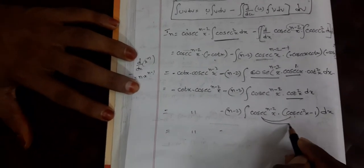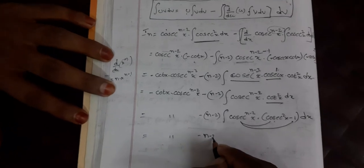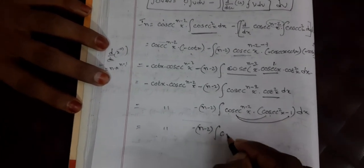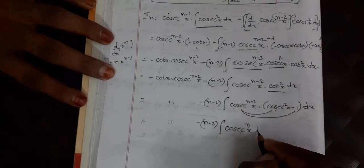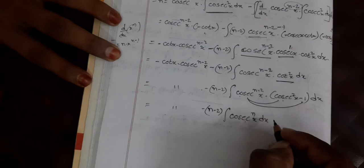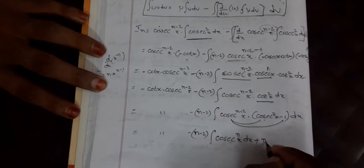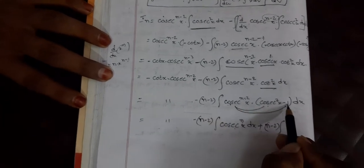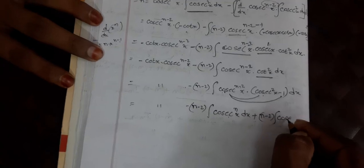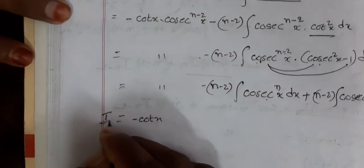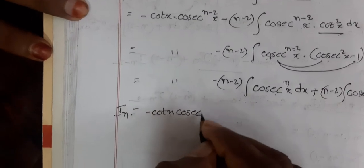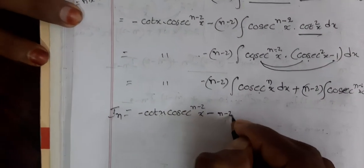Now substitute cot²(x) = cosecant²(x) − 1. So the integral becomes (n−2)·∫cosecant^(n-2)(x)·[cosecant²(x) − 1] dx, which splits into (n−2)·∫cosecant^n(x) dx [since (n−2)+2 = n] minus (n−2)·∫cosecant^(n-2)(x) dx. So that equals −cot(x)·cosecant^(n-2)(x) minus (n−2)·I_n plus (n−2)·I_(n-2).